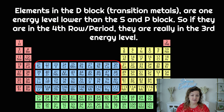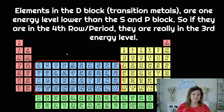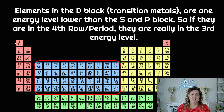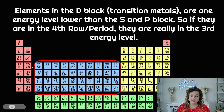So there are elements right here in this blue section — those are your transition metals, that's also your D block. They're actually an energy level lower than the S and P block. Because of this, we need to take away one whenever we're writing our electron configuration, because they are one energy level down. So what do I mean by this? I mean if this is period one, period two, period three, period four — this top row of the D block should be four, you'd think. However, we're gonna count this one as three — so minus one when we enter the D block.